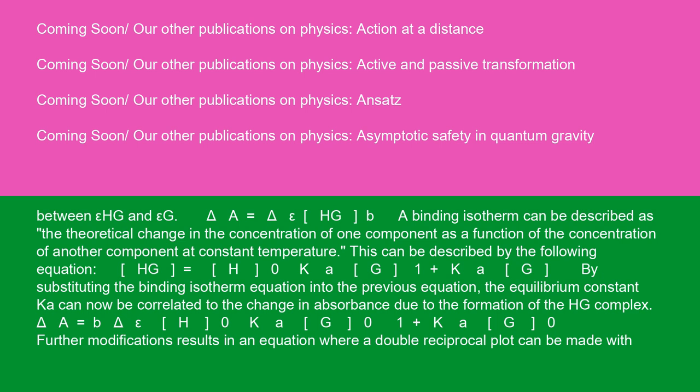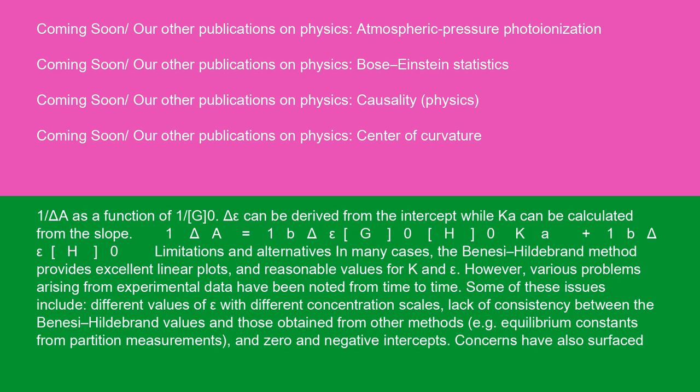Delta A equals b times delta epsilon times H0 times Ka times G0 divided by 1 plus Ka times G0. Further modifications result in an equation where a double reciprocal plot can be made with 1/delta A as a function of 1/G0. Delta epsilon can be derived from the intercept while Ka can be calculated from the slope. 1/delta A equals 1 divided by b times delta epsilon times G0 times H0 times Ka plus 1 divided by b times delta epsilon times H0.